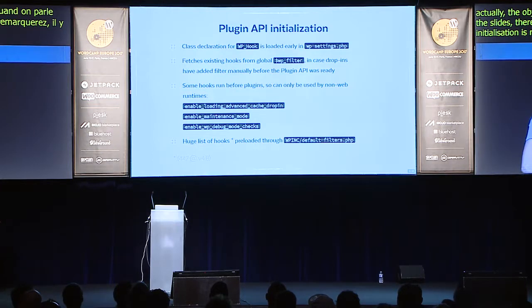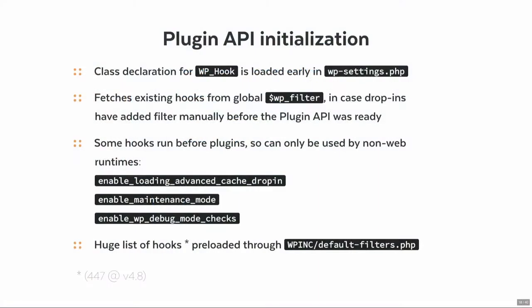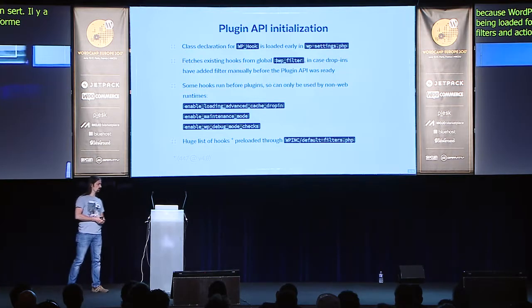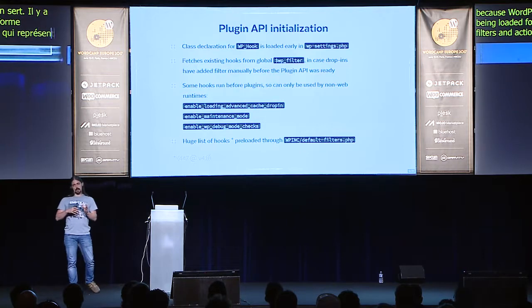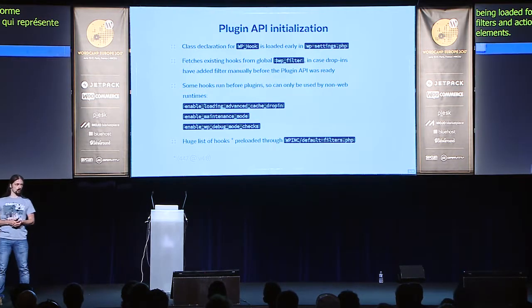So the plugin API initialization is run early, as I said, so that as soon as possible the actions and filters are enabled, because WordPress uses them itself as well. There's a class declaration that is being loaded for a class WP_Hook. A hook is the generalized form that represents both filters and actions, and this class is an object representing both of these elements. When the plugin API is getting initialized, it assumes that some code might — prior to the loading of the plugin API — already manually add filters to the global that contains the filters. So first it goes through that global and for every filter it finds, it makes sure that the filter is in the correct state and is represented by a WP_Hook class.